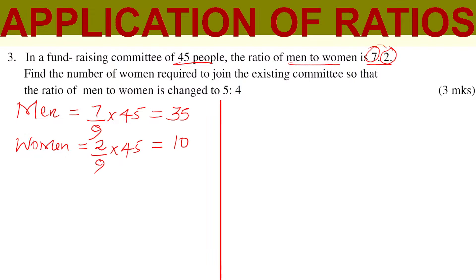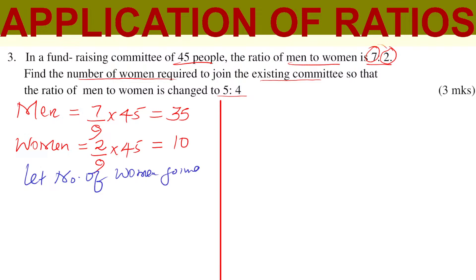So we have the number of men as 35 and women as 10. The next statement: find the number of women required to join the existing committee so that the ratio of men to women is changed to 5 to 4. Let the number of women who are going to join be represented by X. So let the number of women joining be X. If the initial number of women is 10, after joining, the women will increase by X. So 10 plus X represents the new number of women after X women joined the existing committee.